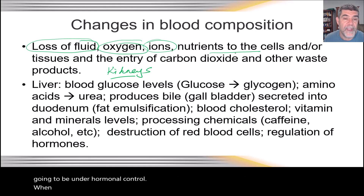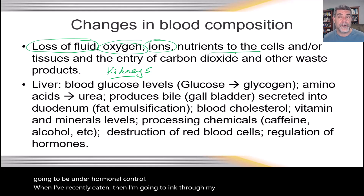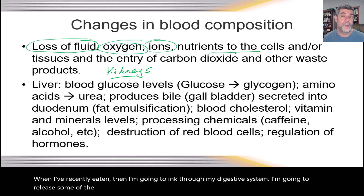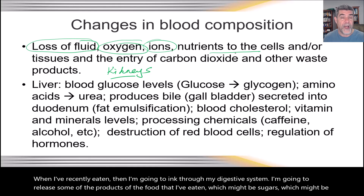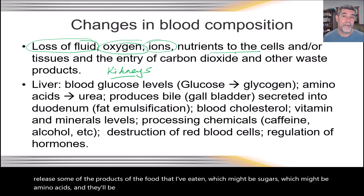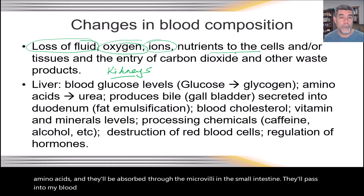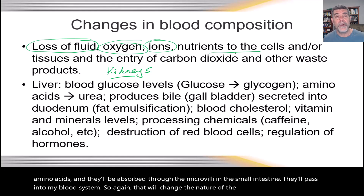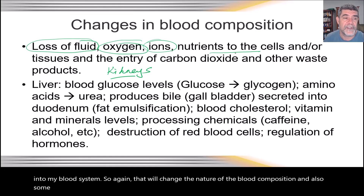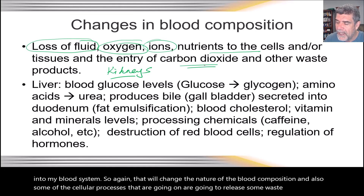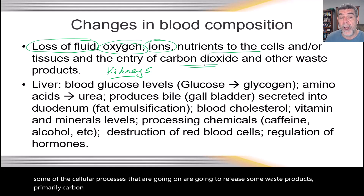When we've recently eaten, through the digestive system we release products of the food — which might be sugars or amino acids — and they'll be absorbed through the microvilli in the small intestine and pass into the blood system, changing its composition. Some cellular processes are also going to release waste products, primarily carbon dioxide but also nitrogen wastes, and those have to be removed so they don't build up and poison the body.